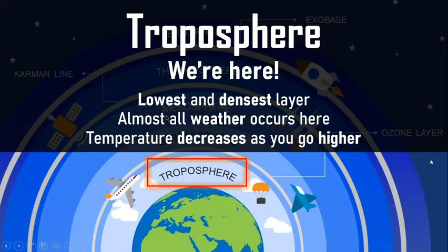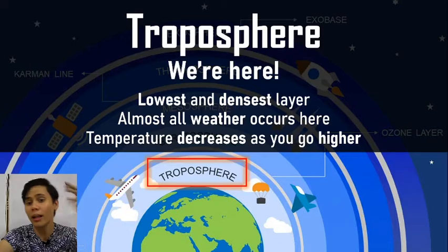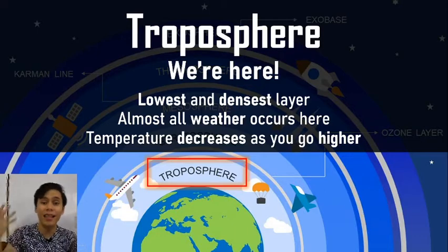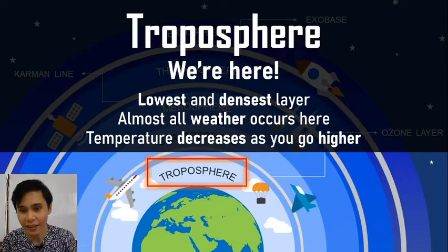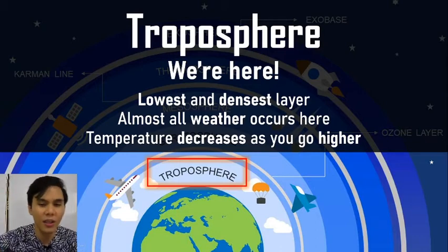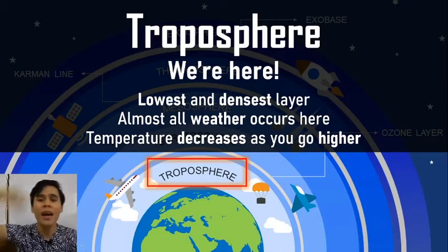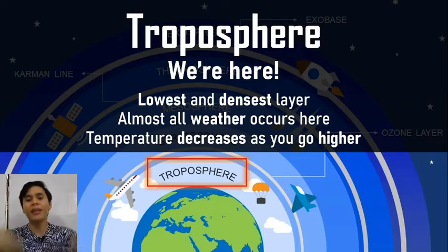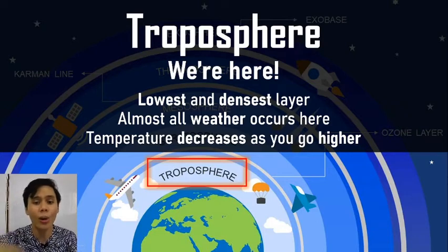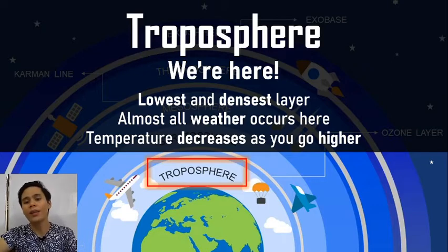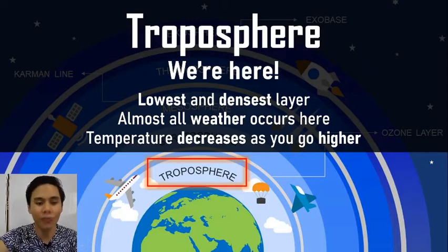The lowest and densest layer is the troposphere — that's the layer we're in. The troposphere is also where most weather conditions occur: all your tornadoes and storms are there. Generally, the temperature decreases as you go higher, which is why at high altitudes the temperature becomes very, very low.